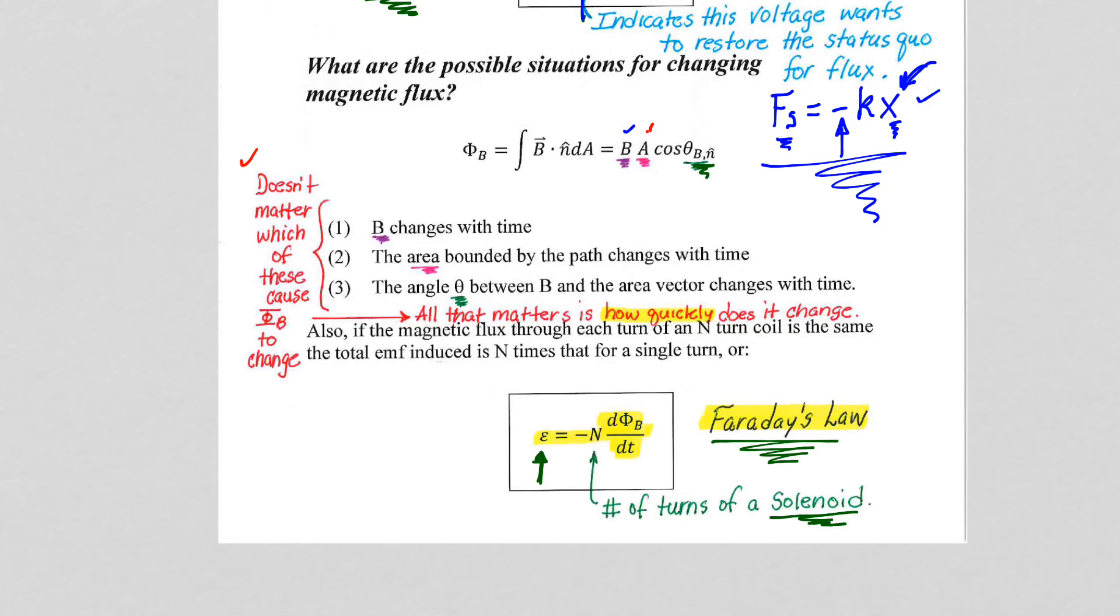Hooke said that I've done all these experiments with springs, and that's how springs behave. Faraday did all of these experiments with magnetic fields and coils, and said, this is how nature behaves. You get this induced voltage in a coil that produces an induced current that makes an induced B field to fight the changing flux.